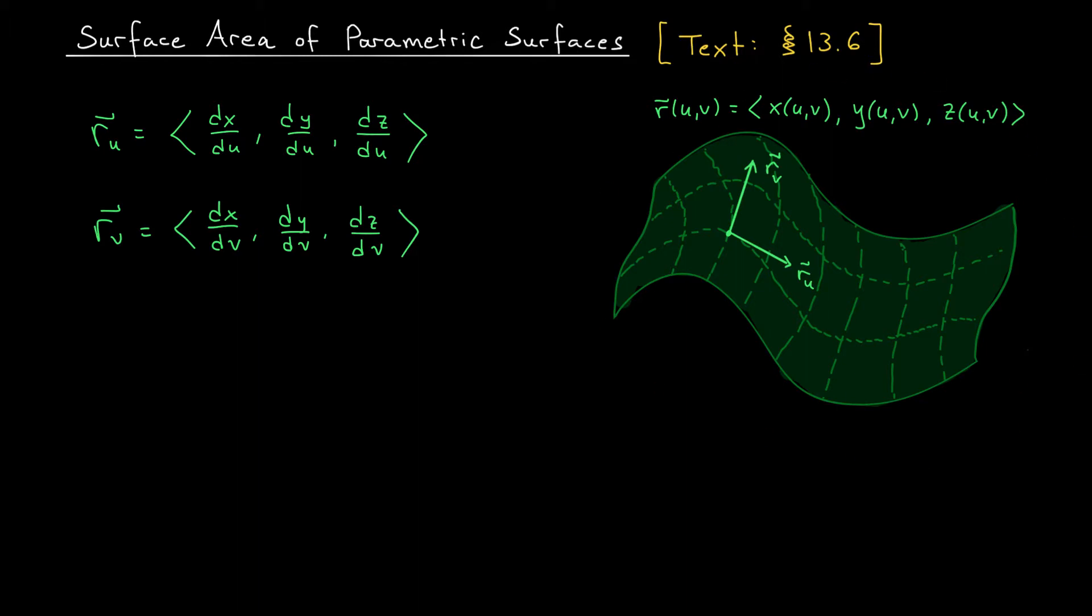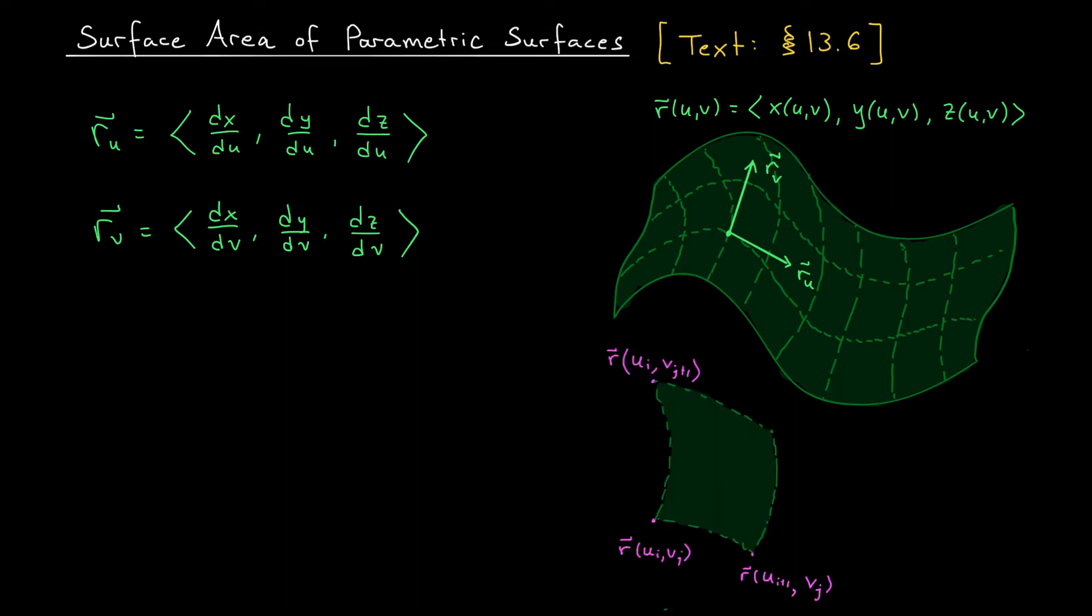Alright, let's zoom in on one of these patches, maybe this guy right here. If the point in the corner is r of ui, vj, well then up here we're going to be moving to our next u grid line. So this would be r of ui plus 1, vj. And over here we're moving to our next v grid line. We have r of ui, vj plus 1. Now I don't know how to find the area of this patch exactly—it's all curved and probably quite difficult to work with.